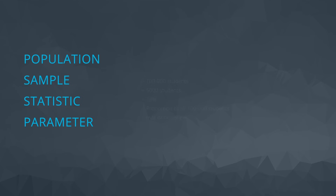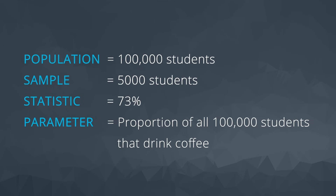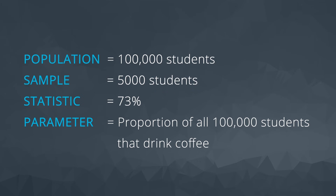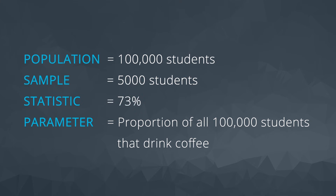The general language associated with this scenario is as shown here. We have a population, which is our entire group of interest — in our case the 100,000 students. We collect a subset from this population which we call a sample — in our case the 5,000 students. Any numeric summary calculated from the sample is called a statistic — in our case the 73% of the 5,000 that drink coffee.